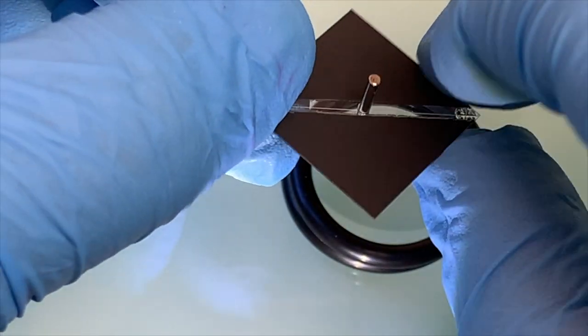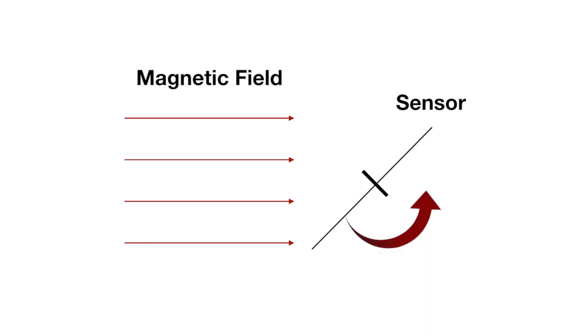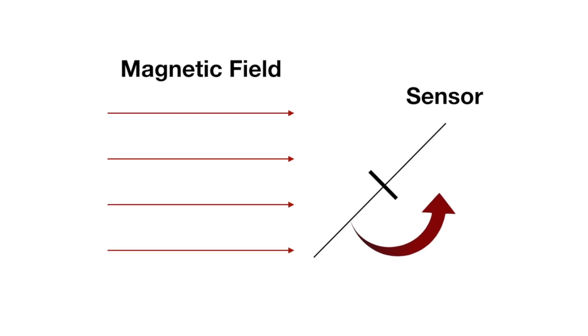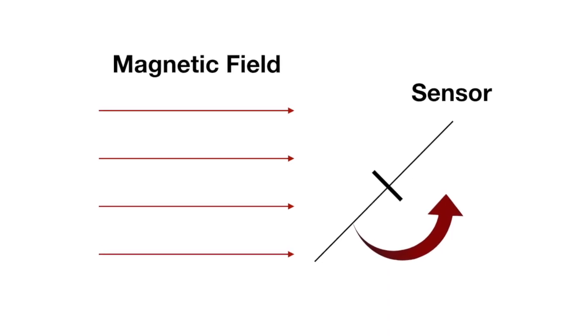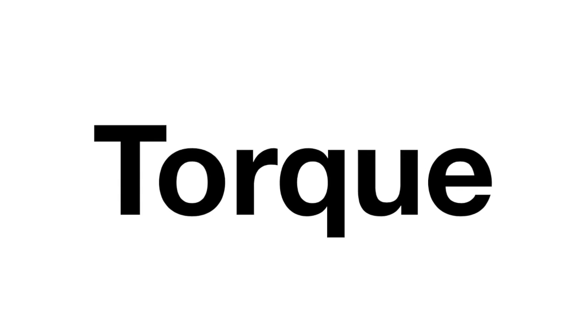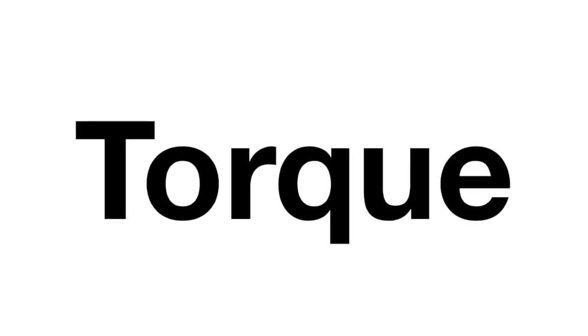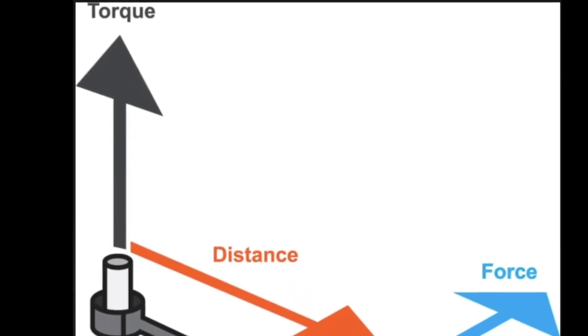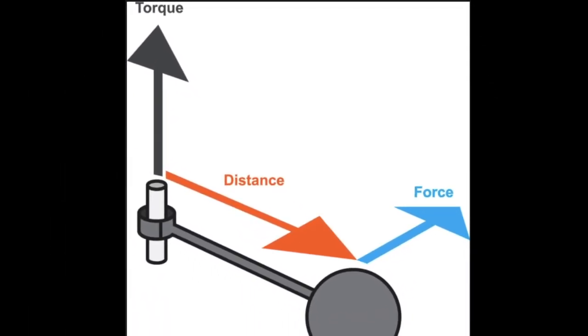Now, since we want the magnetic field from the solar wind to cause our sensor to rotate, we need the interaction between the sensor and the field to create a torque, or a rotating force. Since, as you may remember from high school physics, torque increases not only with the strength of the applied force, but also with the length of the lever arm,